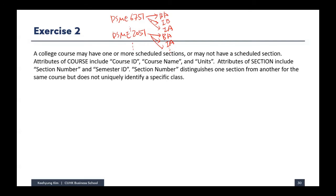The main question to notice: for the course, using the course number you can identify each course because it has a unique number. But for the section offering, we cannot simply use a section number alone, because the section number 'IA' can also be used for another course. By using only 'IA', you are not able to uniquely identify one section from another.